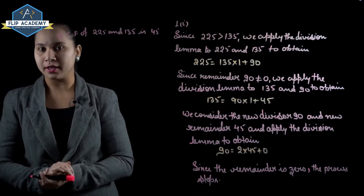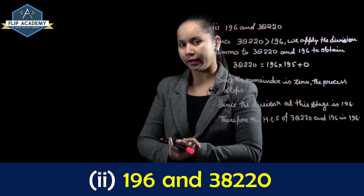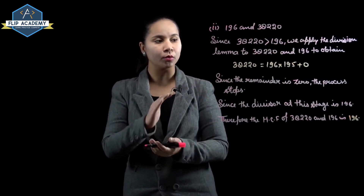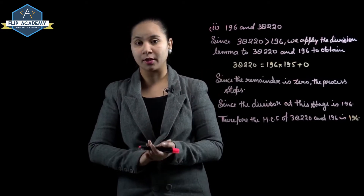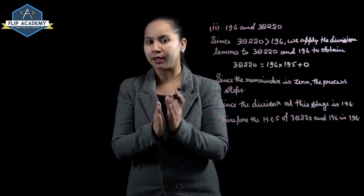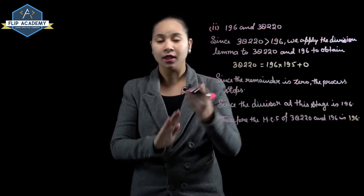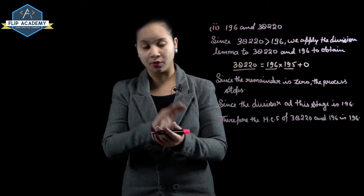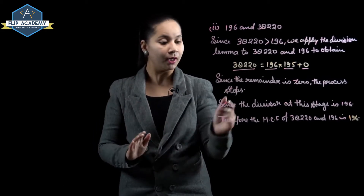Second part: HCF of 196 and 38,220. Since 38,220 is greater than 196, we apply the division lemma to 38,220 and 196. Using the rule dividend = divisor × quotient + remainder: 38,220 = 196 × 195 + 0. Here 38,220 is the dividend, 196 is the divisor, 195 is the quotient, and the remainder is 0. Since the remainder is 0, the process stops immediately.